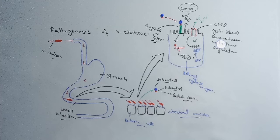Here, when chloride ions move out of the cell into the lumen, the water and sodium will also move into the lumen. When water comes into the lumen, it will cause diarrhea. So this was the whole pathogenesis of Vibrio cholerae.